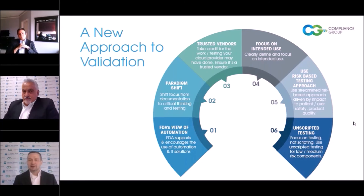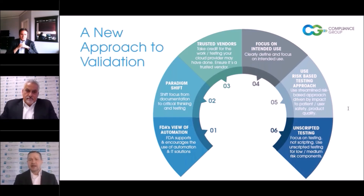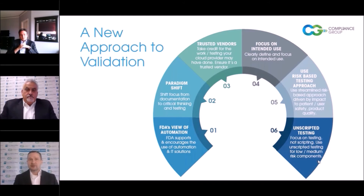Number three: trusted vendors. Take credit for the fact that you're auditing your vendors, you're determining they're in a state of control, you're doing due diligence, and you're putting SLAs in place. Take credit for all the good work they do and don't redo it — don't re-execute their test cases. Number four: focus on the intended use of the system. We have seen validations with thousands of pages of testing that at the end of the day lacked testing for intended use.